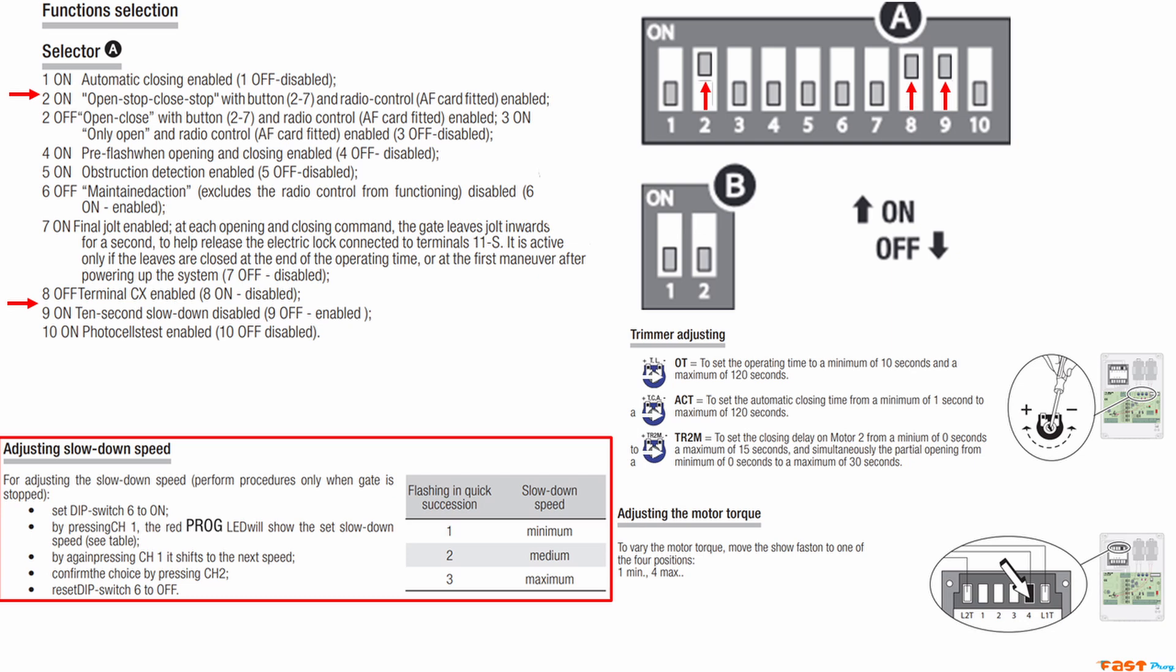You can fine-tune this later by increasing or decreasing the time so that the motors stop 2 to 3 seconds after the gates reach their stop points.